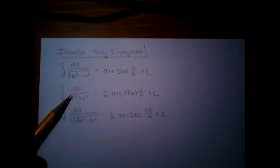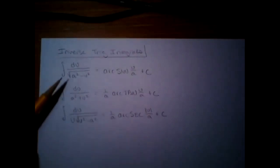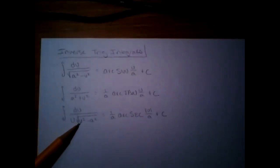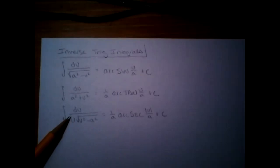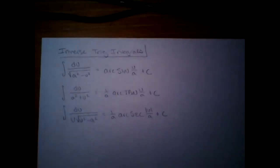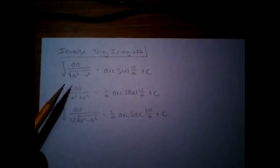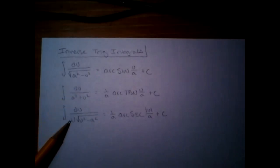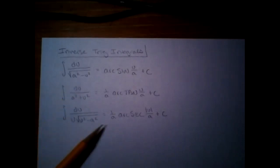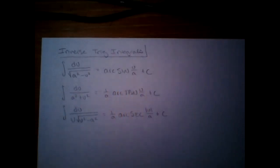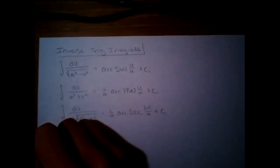So that one's arc tangent. Now out of the other two that both have a square root, how can you tell the one that's arc secant? There's a u in front — there's like a little extra doodad there. That's really all you have to be able to do. The one with no square root is arc tangent. The one that's got an extra little coefficient out front is arc secant. And again, they're all arc whatever u over a plus c. Let's do a problem, because I know when I write that out it just inspires terror in everybody.